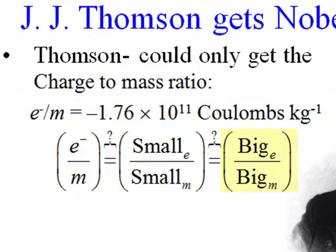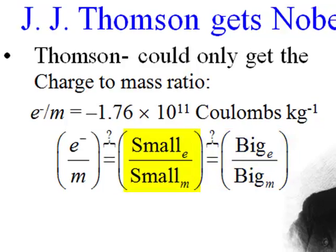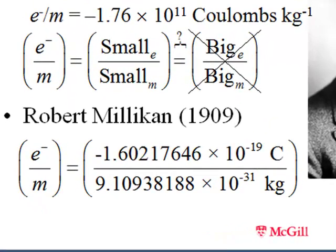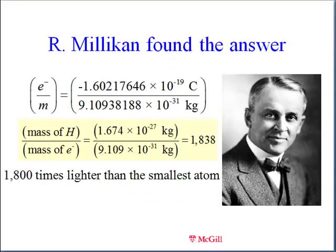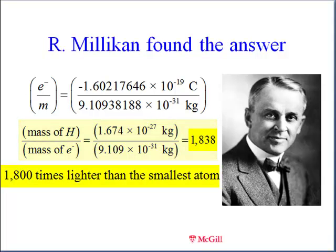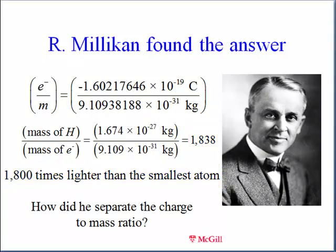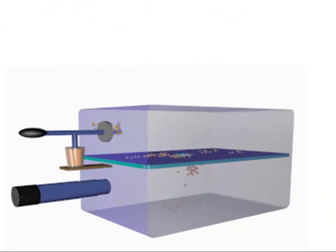Was this the ratio of two big values or two small values? Robert Millikan separated this to show the ratio was that between two small numbers, and in this way he was able to extract the elementary charge and the electron mass. Comparing the electron mass to that of the lightest element hydrogen, the mass of the electron is 1800 times smaller. Indeed at that time it was the smallest particle known. Millikan devised an ingenious experiment to separate the two.